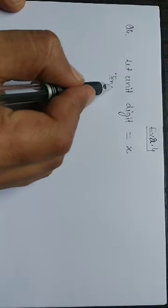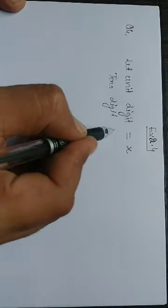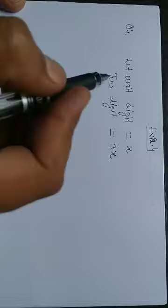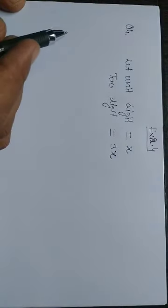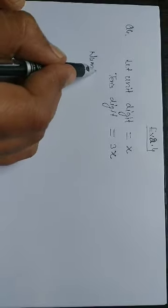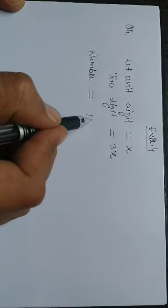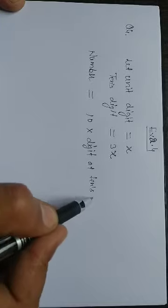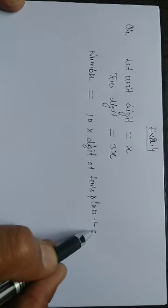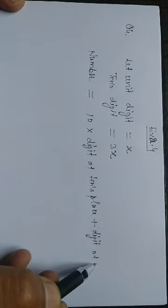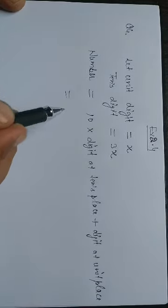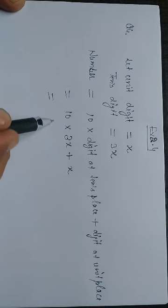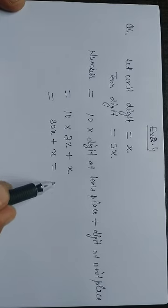The other digit is three times the unit digit, that is 3x. So the original number is equal to 10 times the digit at the tens place plus the digit at the unit place.